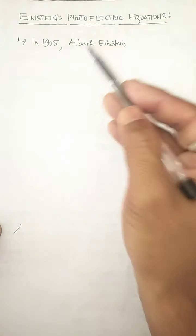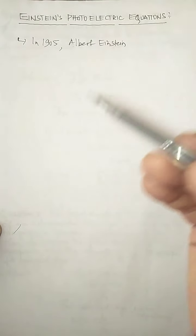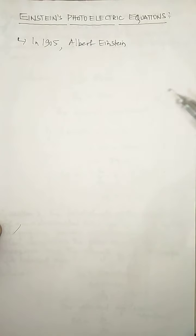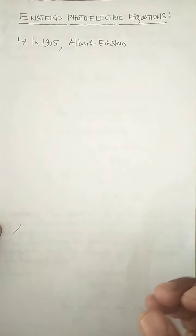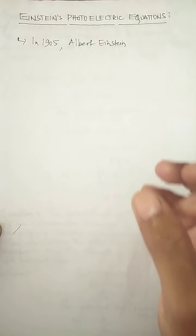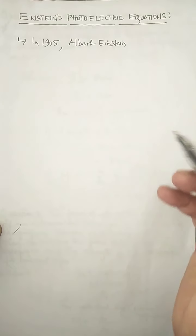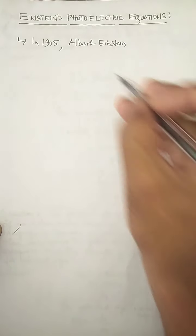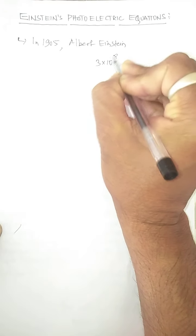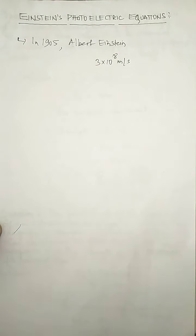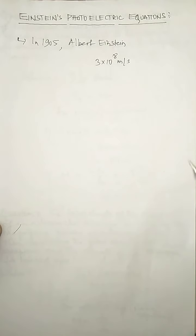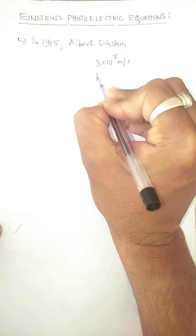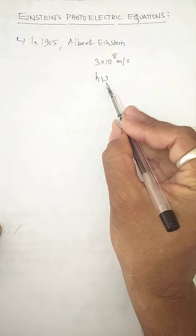According to Planck's quantum theory, which we have learned already, light travels in the form of small bundles or packets of energy. These are called photons. The light or radiation travels with a speed, and the speed of light or radiation in air or vacuum is 3×10⁸ meters per second. As per quantum theory, the energy of each photon is hν, where ν is the frequency of the light.